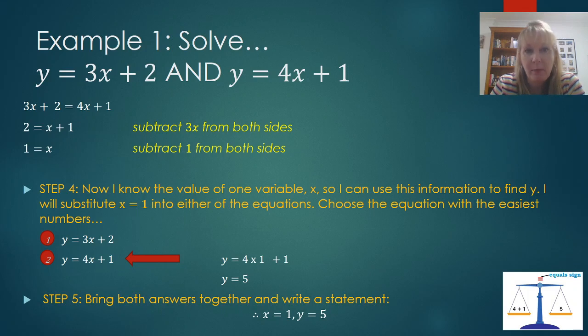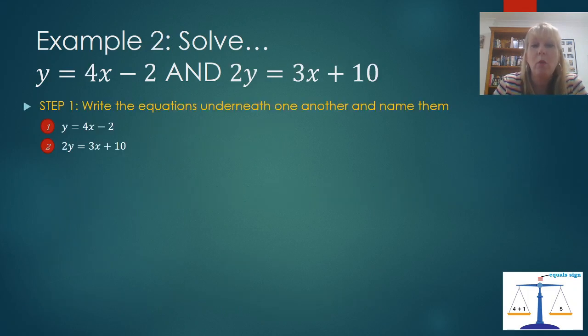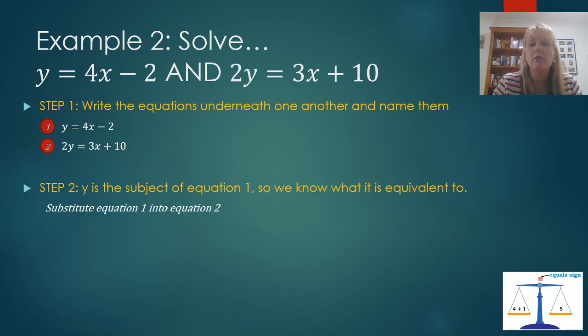Let's try with a slightly harder example. In this case, I've got y equals 4x minus 2, and 2y equals 3x plus 10. I'm going to write one on top of the other, just like I did last time, and name the equations 1 and equation 2. Now, if you remember the last time that we looked at an example, y was equal to this, and y was equal to that. So we could just make this and that equal to each other. But this time, y is only by itself, or the subject, in only one of the equations. So we know that y is equal to 4x minus 2. So if we take that information of what we know about y, we can substitute that into the other equation.